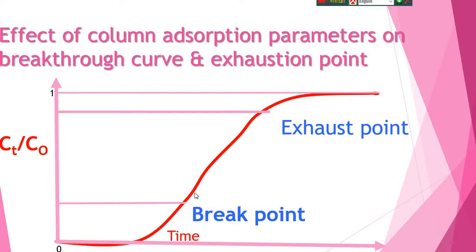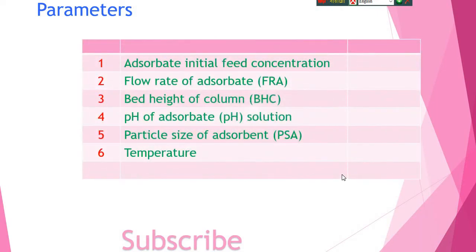Here is a typical example of breakthrough curve, and here is the breakthrough point and here is the adsorption point. The typical parameters of column adsorption are: adsorbate initial concentration, flow rate of adsorbate, bed height of column, pH of adsorbate solution, particle size of adsorbent, and temperature.